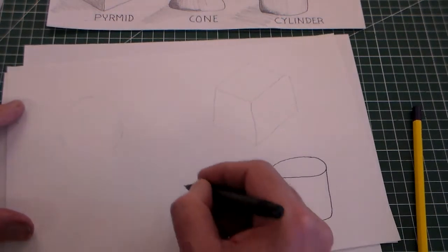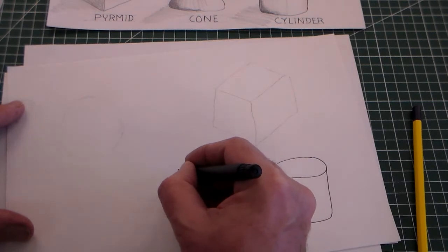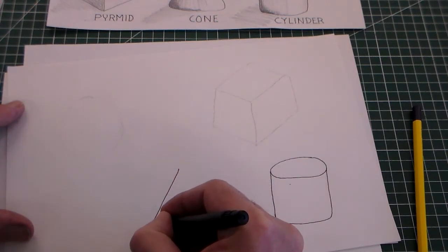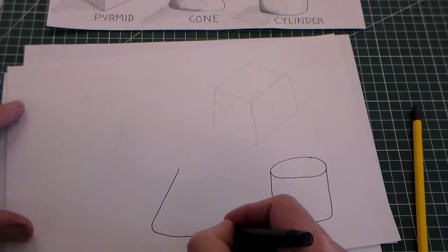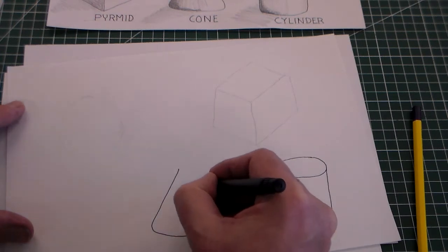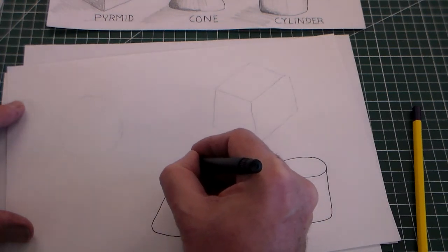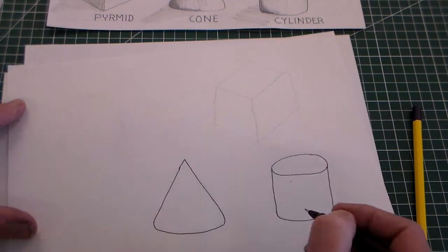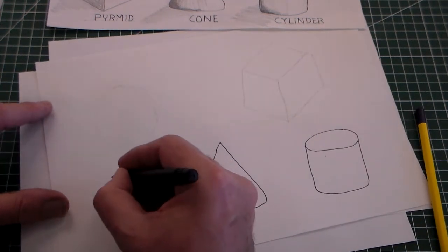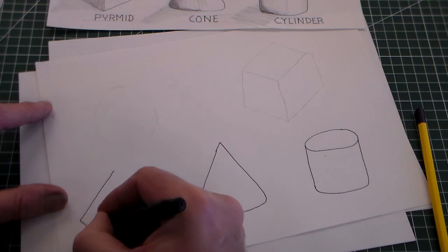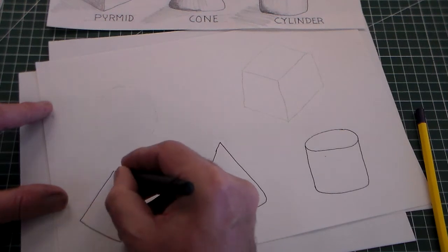Our cone is easy because our cone is a point coming around with an elliptical base and then going back up to the point there. And last of all, we have a pyramid which comes down like this.